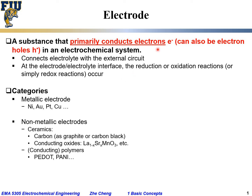Again, electrodes conduct primarily electrons. They connect the electrolyte with the outside circuit, and at the electrode-electrolyte interface, it's where the redox — reduction or oxidation — reaction happens.